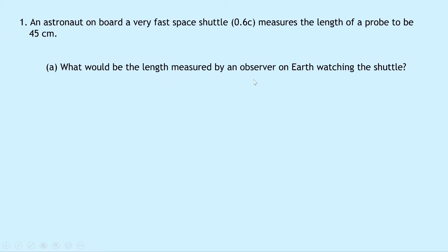Part A says what would be the length measured by an observer on earth watching the shuttle? Well notice that in the question the length of the probe as measured on board the space shuttle is going to be its proper length, which is L, whereas in part A we're asked to find the length measured by an observer on the earth. So that is when you're far away from the rest frame of the event or the object in this case. So we're trying to find L dash or L prime and we're given L.